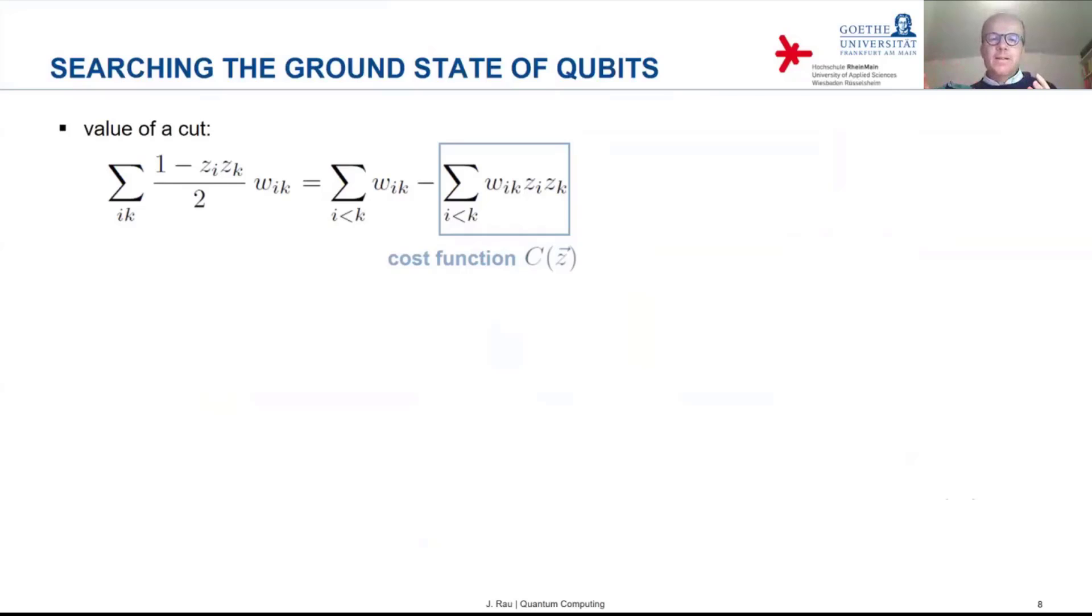And this second sum is also called a cost function. It's a function of this collection of variables z. And because we have a minus sign in front, maximizing the value of the cut amounts to minimizing the cost function.